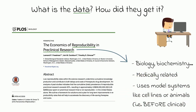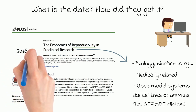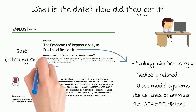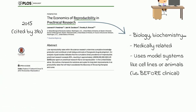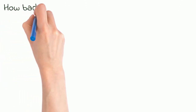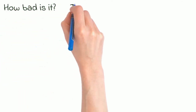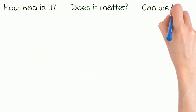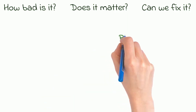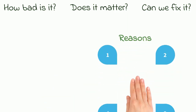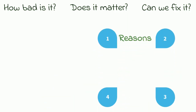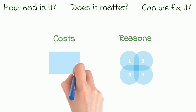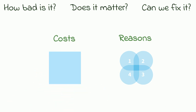This study was published in 2015, and it's one of many influential and striking papers that really tried to point out the extent of the reproducibility problem, its impact, and how to solve it. The authors focus on potential reasons for the reproducibility problem, and what it might mean in terms of the money wasted on non-reproducible results.